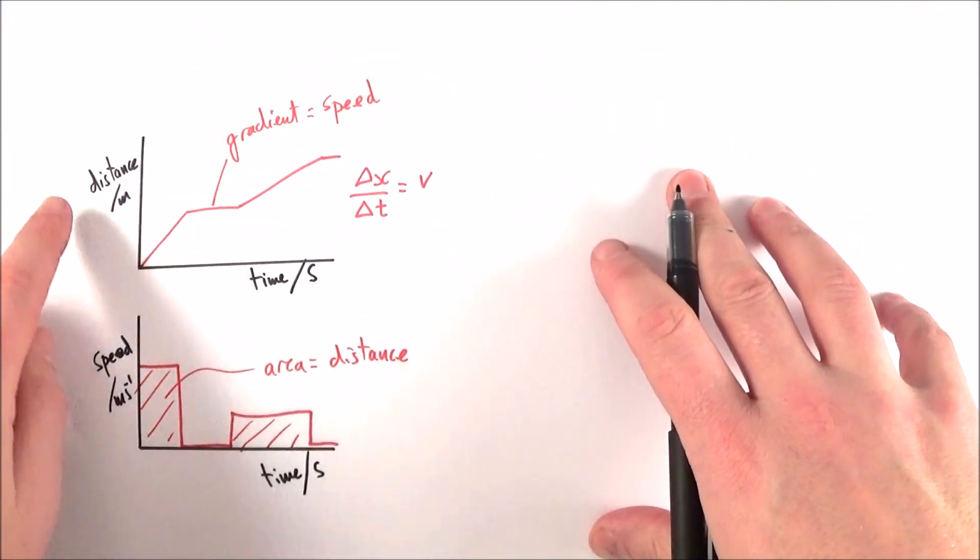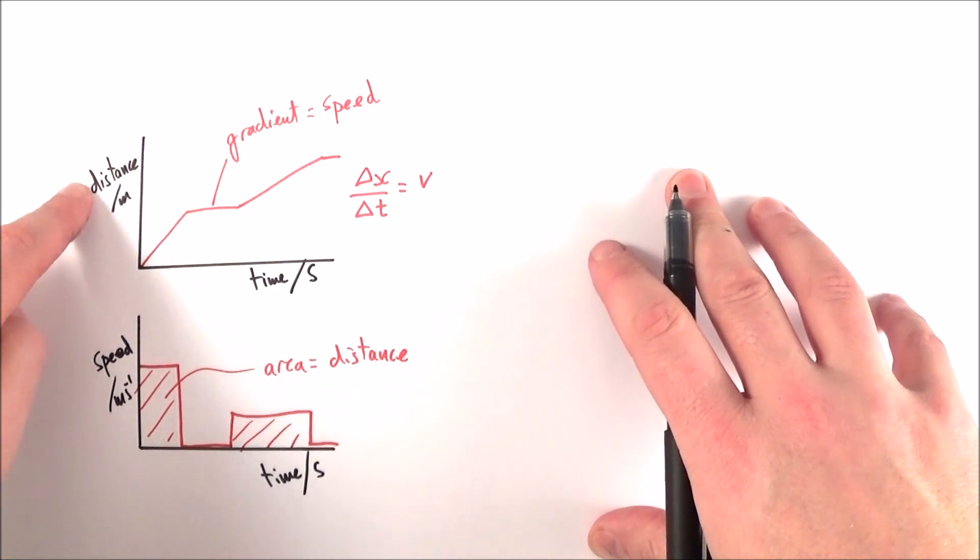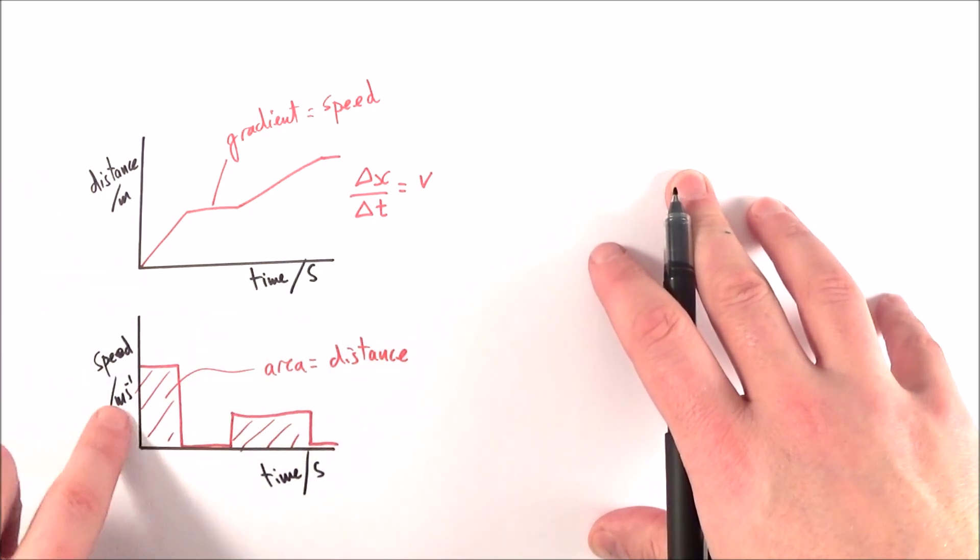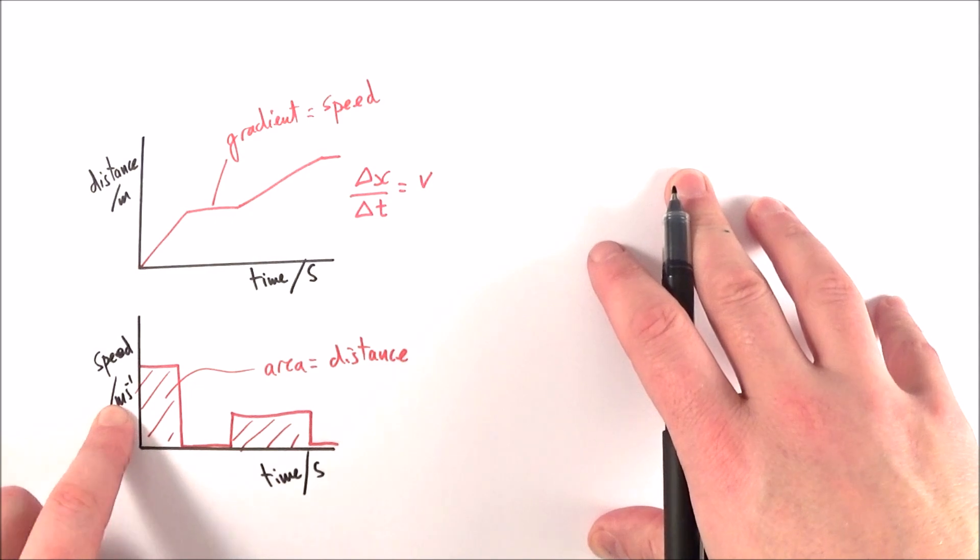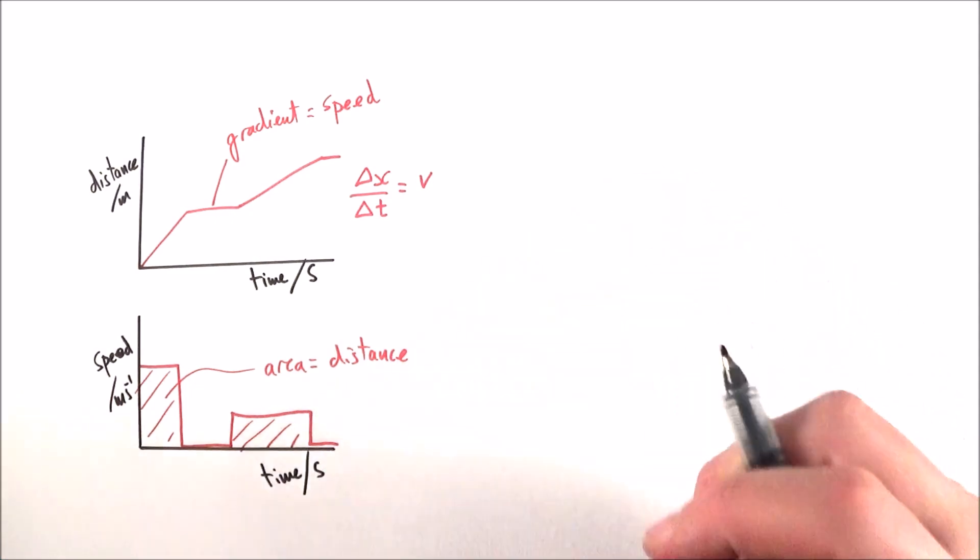And we don't just think about distance, we know about displacement, which can be positive or negative. We also have a velocity rather than speed, which again can be either a positive or a negative value.